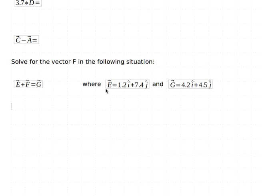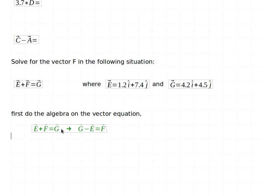So rather than immediately plugging in my values for E and G, let's go ahead and do some algebra on the vector equation. And when I do that, in order to get F by itself, I'm going to subtract E over to the other side.